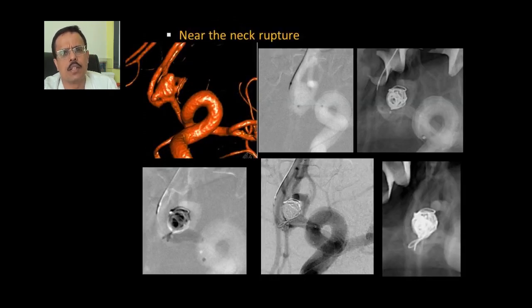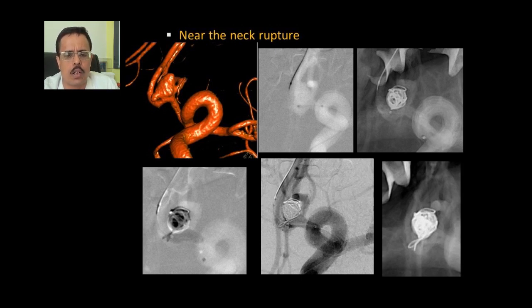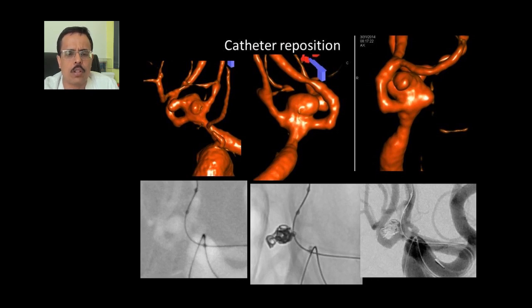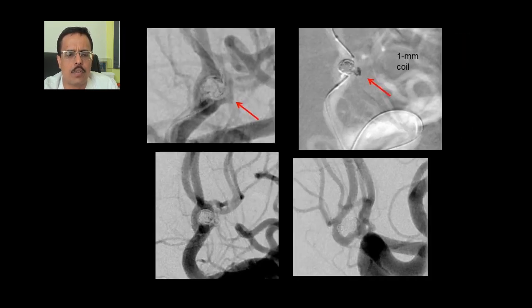Another scenario is near-the-neck rupture. This patient had a broad-neck anterior communicating artery aneurysm with a near-the-neck lobule which is probably the rupture site. In these cases, we always use a balloon placed in the right ACA. We start with coiling and ensure that some coil loops go into these lobules for a good outcome. Sometimes we reposition the catheter to reach all lobules. In this multi-lobulated anterior communicating aneurysm, balloon-assisted coiling left a very small lobule remaining, so we took a microcatheter to that part and placed a 1 mm coil, resulting in absolute complete reconstruction.